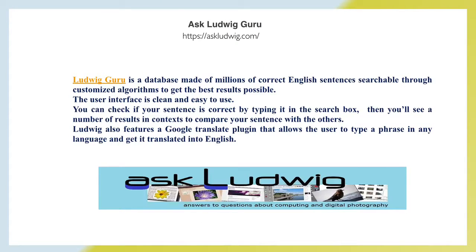Ask Ludwig is a database made of millions of correct English sentences, searchable through customized algorithms to get the best results possible. The user interface is clean and easy to use. You can check if your sentence is correct by typing it in the search box and seeing results in context to compare your sentence with others. Ludwig also features a Google Translate plugin that allows the user to type a phrase in any language and get it translated into English.